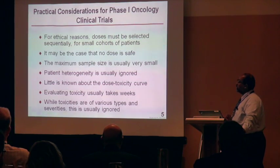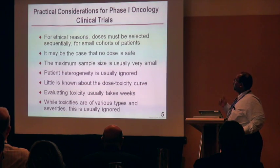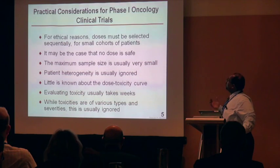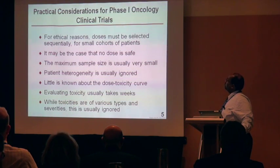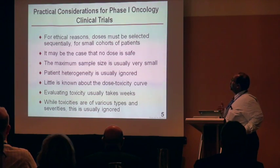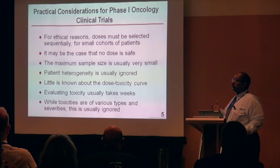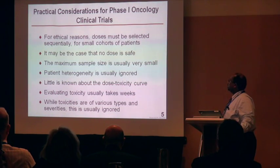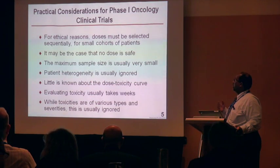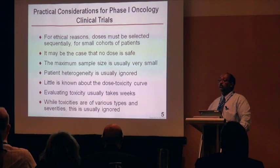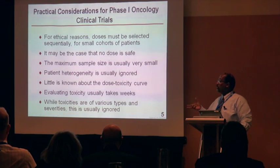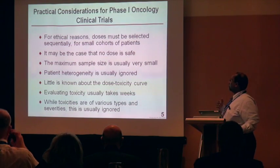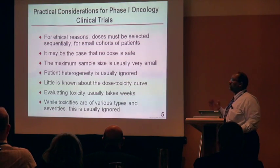There are some practical considerations for Phase I oncology trials that really impact the methods and approach one takes. For ethical reasons, dose must be selected sequentially for small cohorts of patients. It may be the case that no dose is safe. The maximum sample size is usually relatively small. Patients are heterogeneous — different types of cancer, different ages, different genders. Little is known about the dose-toxicity curve. When evaluating toxicity, it's not immediate — it can take two to four weeks, sometimes up to eight weeks. And while toxicities are of various types and severities, this information is usually ignored.